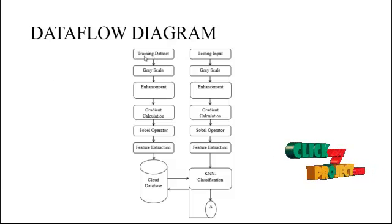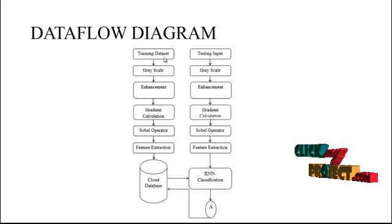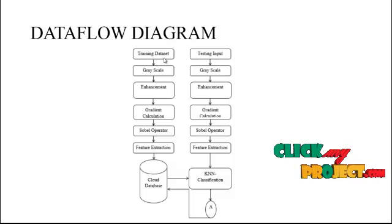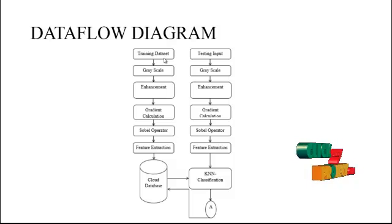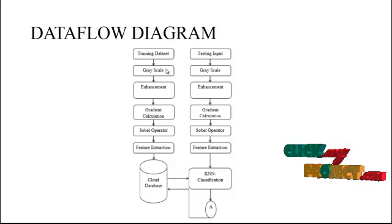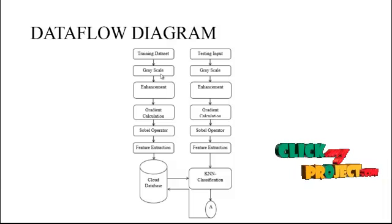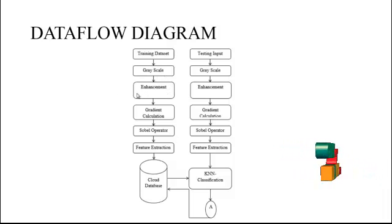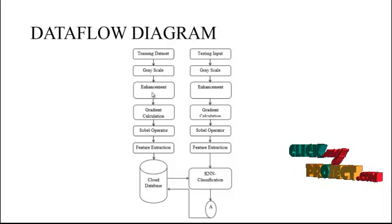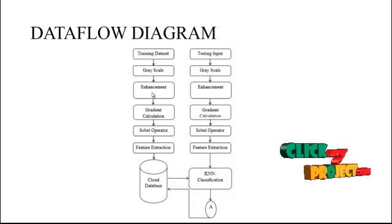First, we want to train the dataset. The training dataset contains leaf disease detections, including disease images. The training dataset performs removal of grayscale and image enhancement. In the enhancement process, it carries out analysis of the related process.